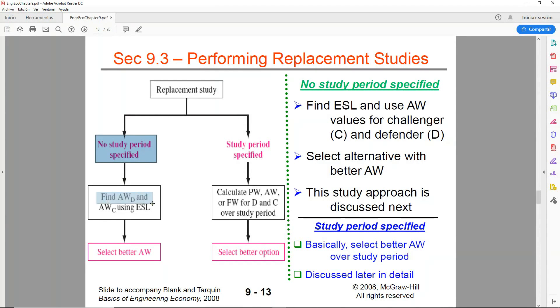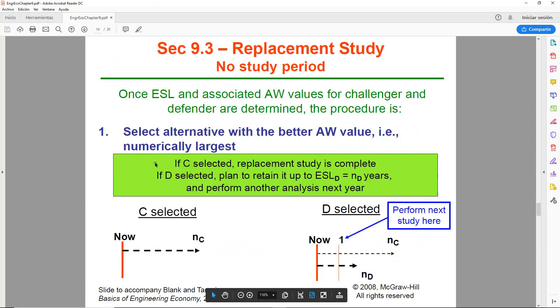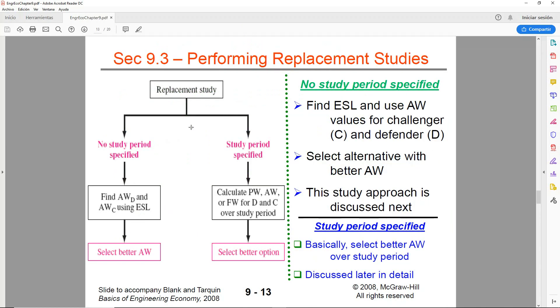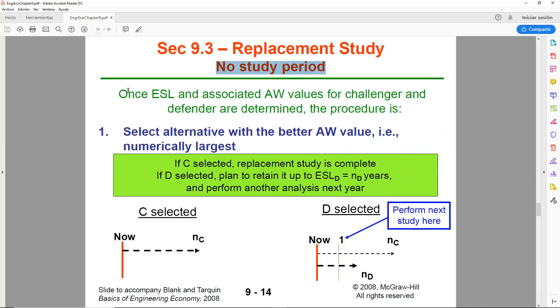The first one, this is the one that we're going to be covering in this example, is with no study period specified. In this case, we will find the annual worth of the defender and the annual worth of the challenger using the ESL that we computed and that we practiced in example 9.2. So we will be looking for ESLs for both the defender and the challenger, and then we're going to be selecting the best one.